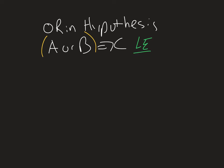This one would be logically equivalent to A implies C and B implies C. Now again, seems weird that we would go from an or to an and.